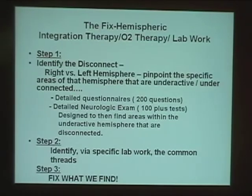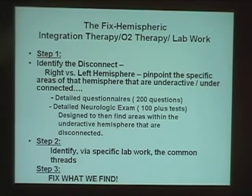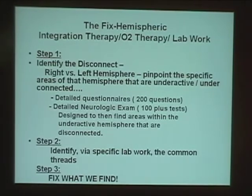So what is the overall fix and plan? Hemispheric integration therapy, oxygen therapy, and lab work. Step one is to identify the disconnect. We use detailed history, questionnaires, and a neurological exam with hundreds of different tests for specific areas of the brain. We can not only identify the hemisphere but also what specific areas within the brain are weak — the cerebellum, parietal or temporal lobes, amygdala, basal ganglion, and so on.